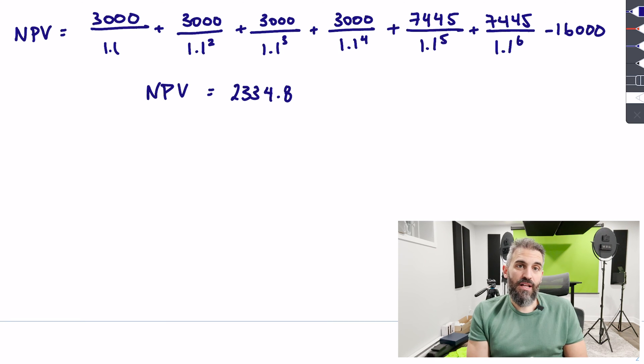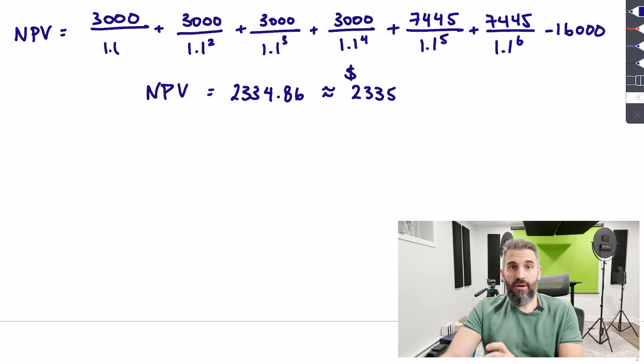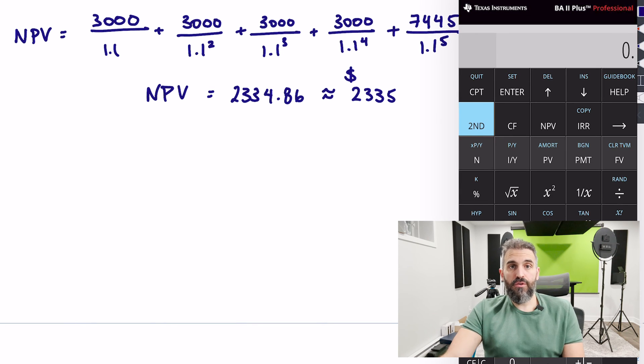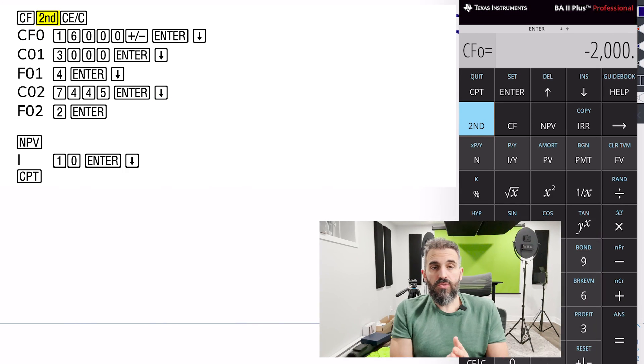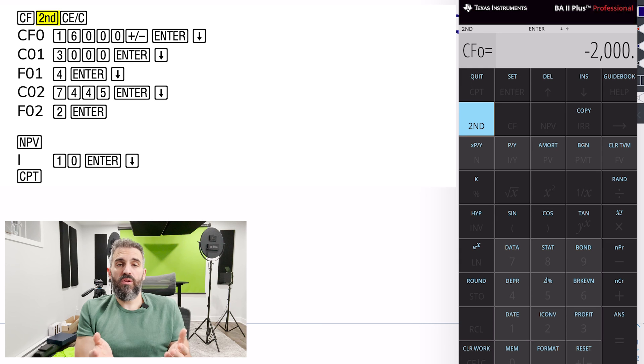So we can see that the net present value is actually $2,335. In this next part, I'll show you how to enter it into your financial calculator for those of you that are using the cash flow function on your BA2+.